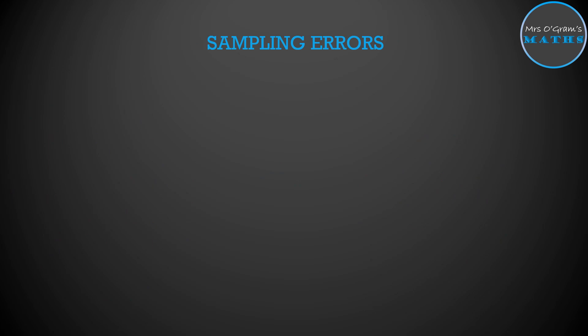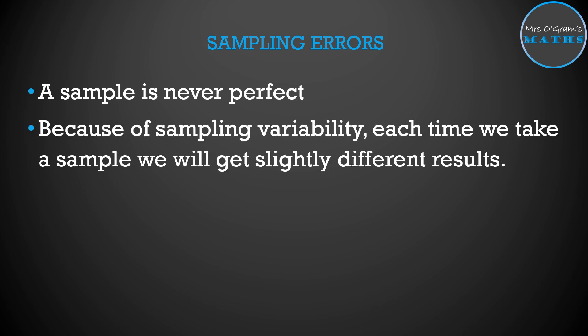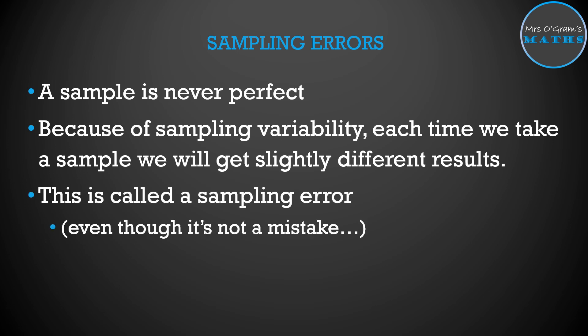This leads to what's called sampling errors. This is talking about the fact that a sample is never perfect. Because of that sampling variability, every time we get a sample we will get some slightly different results on the test statistic that we were calculating, and that's what's called a sampling error.